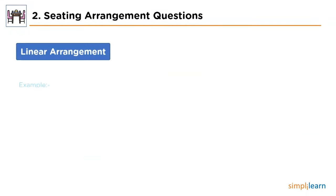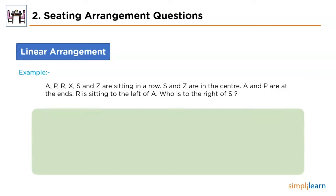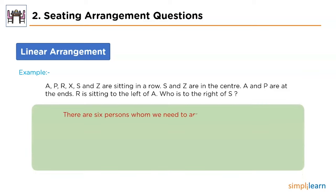First, we'll solve the sample problem based on linear seating arrangement. The problem states that A, P, R, X, S and Z are sitting in a row. S and Z are in the center, A and P are at the ends, and R is sitting to the left of A. Then who is sitting to the right of S? From the first statement, we can say we are supposed to arrange 6 persons in a straight line.